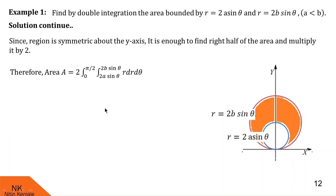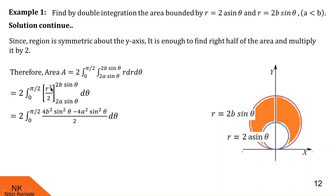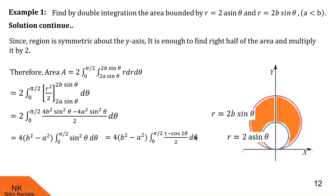Now let us proceed with evaluation of this integral. First we evaluate the inside integral with respect to r. Integration of r gives r²/2 over the limit 2a sinθ to 2b sinθ. The factor of 1/2 cancels with the outside 2. Substituting the limits, we get (2b)² sin²θ − (2a)² sin²θ, which is 4b² sin²θ − 4a² sin²θ. Taking sin²θ common, we get (4b² − 4a²) sin²θ, leaving the integral of sin²θ dθ from 0 to π/2.